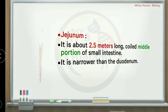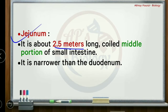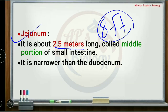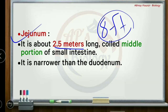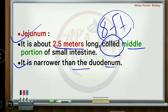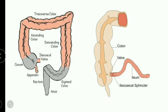The jejunum is the second part of the small intestine. Its length is approximately 2.5 meters — about 8 feet. The jejunum is narrower than the duodenum. This length measurement in meters is important for examination questions.